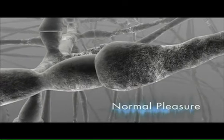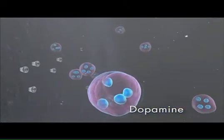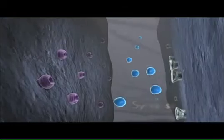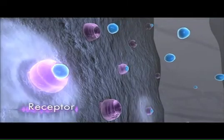What we'll see next is how we normally experience pleasure. The sending neuron contains dopamine, the brain's pleasure chemical. When something good happens to us, this feel-good chemical is released into the synapse, where it connects with receptors.